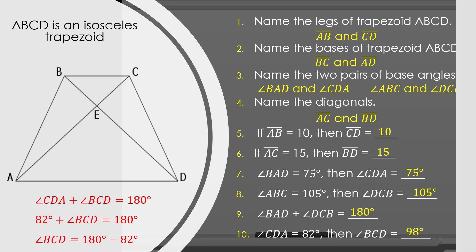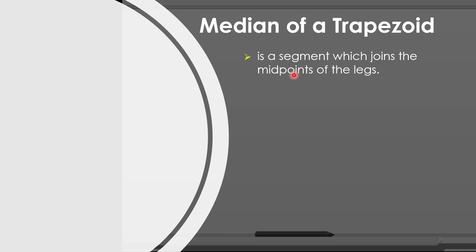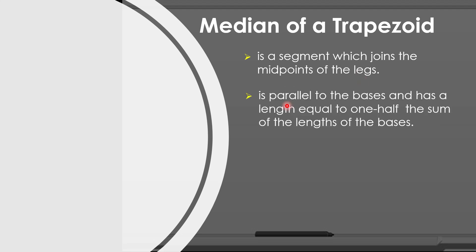Let us now move on to the median of a trapezoid. When we say median of a trapezoid, it is a segment which joins the midpoints of the legs, and it is parallel to the bases and has length equal to one-half the sum of the lengths of the bases.